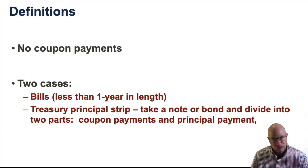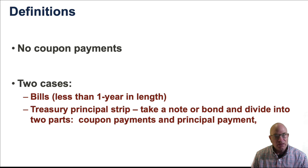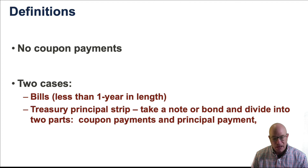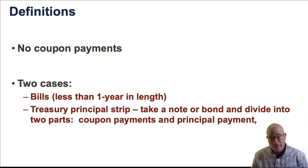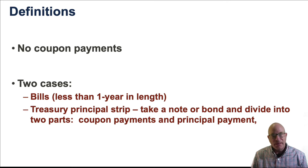Number one, it's a Treasury bill — less than one year in length, in which case there are no coupon payments and you only get the par value at the end. It's a zero-coupon bond. The other case is what is known as a Treasury principal strip. What happens is they take a normal Treasury note or bond and strip out and sell the coupon payments in one bundle and the principal payment in another bundle. The principal strip would be one payment, and because the coupon payments are removed, we now have a zero-coupon bond.